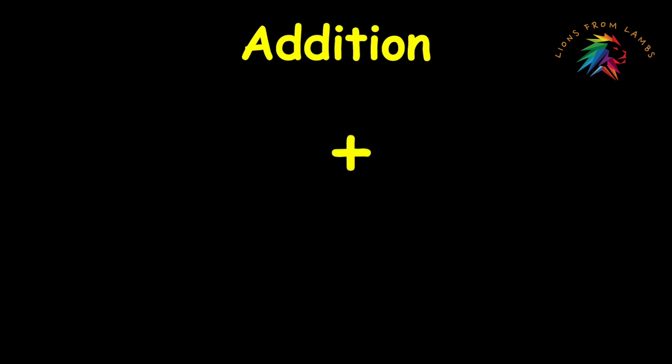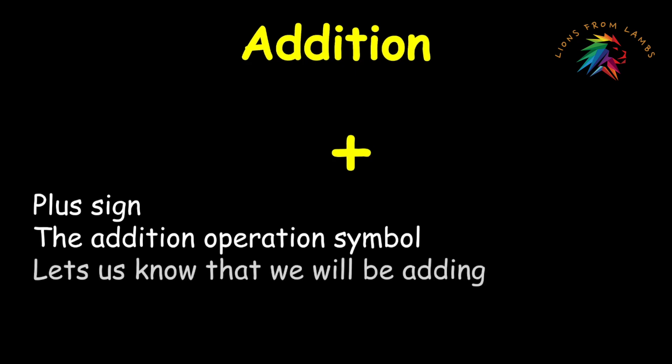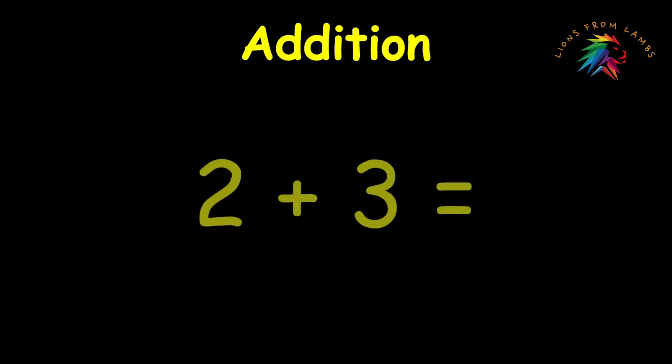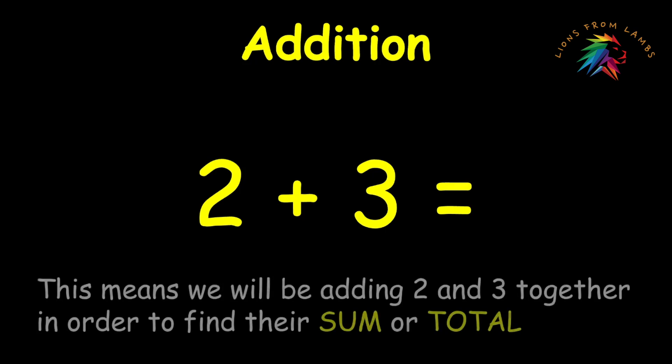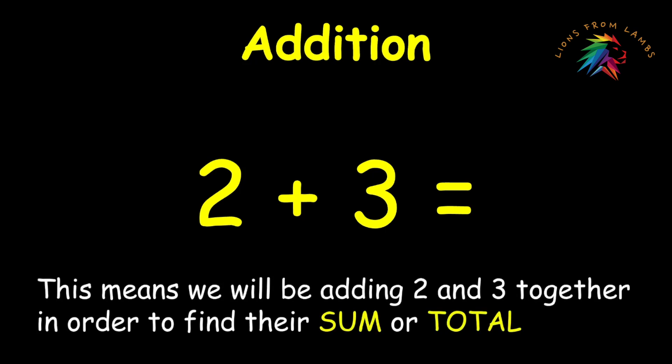This is the plus sign, or the addition operation symbol, and this tells us that the operation we're going to be performing will be addition. Now, in this addition problem, we will be adding two and three together in order to find their sum or their total.